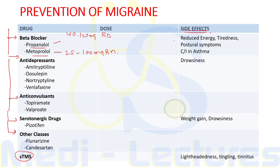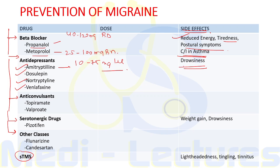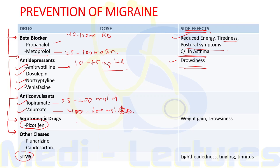Antidepressants for prevention include amitriptyline, dosulepin, nortriptyline, and venlafaxine — amitriptyline at 10 to 75 mg at night, with usual side effect of drowsiness. Anticonvulsants include topiramate at 25 to 200 mg per day and valproate at 400 to 600 mg twice daily. Serotonergic drugs include pizotifen at 0.5 to 2 mg four times daily, with side effects of weight gain and drowsiness.